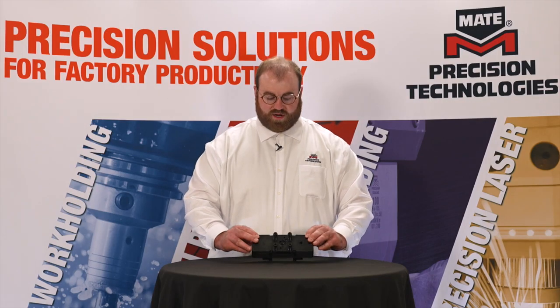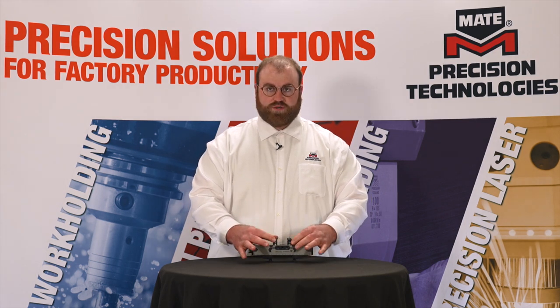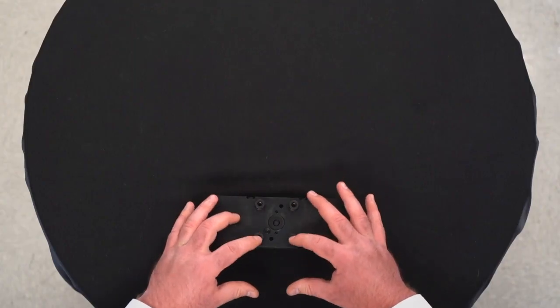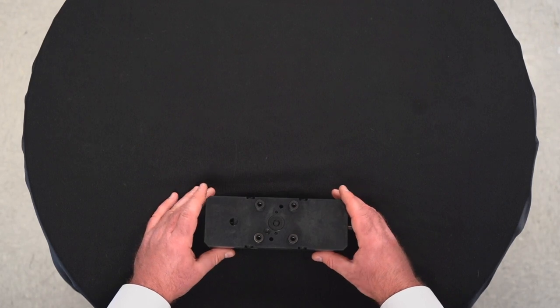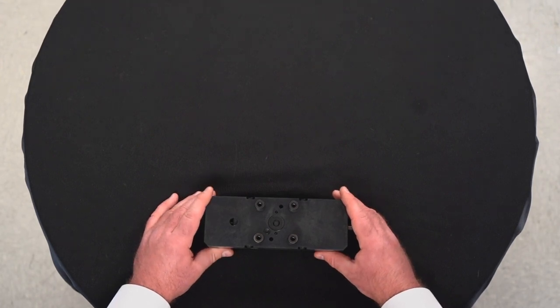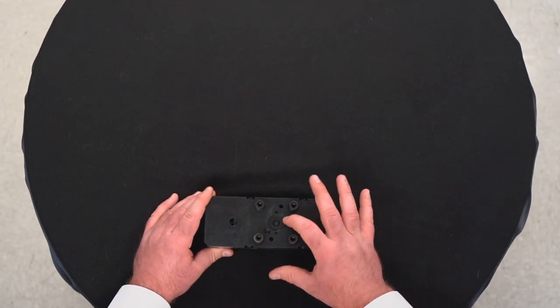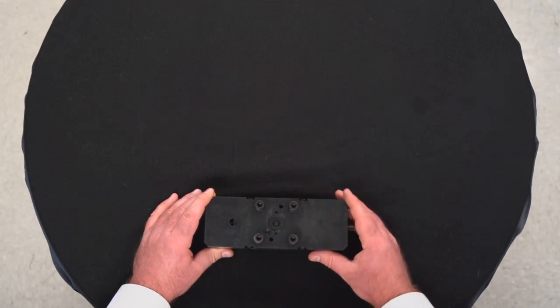All Mate vices are compatible with other manufacturers who utilize the same 5296 spacing on their workholding systems. We are also compatible right out of the box with the Schunk Vero S 40 millimeter pin.